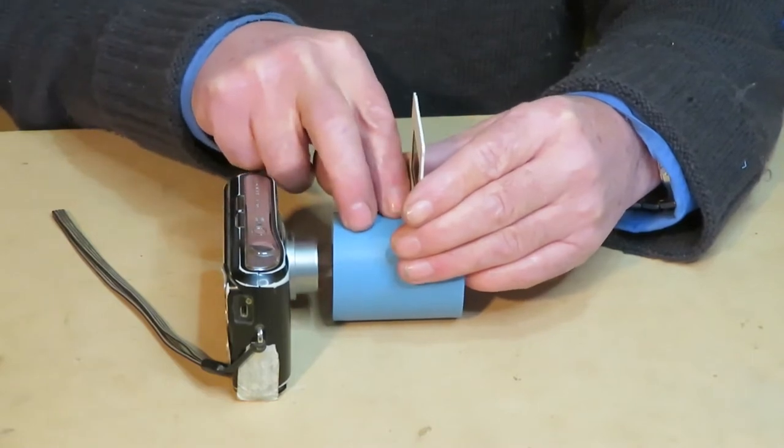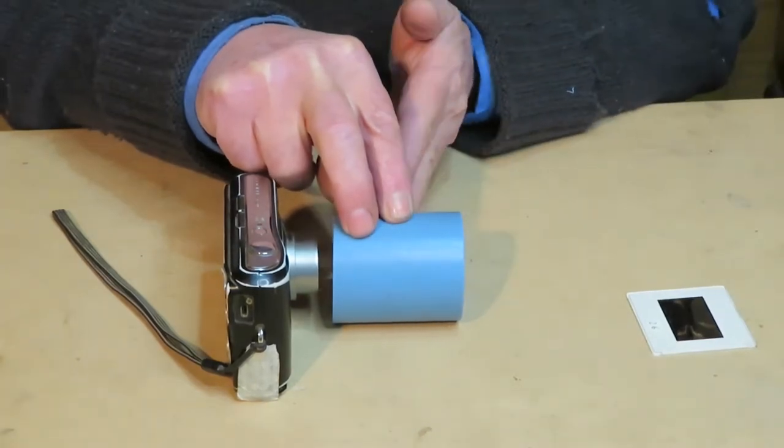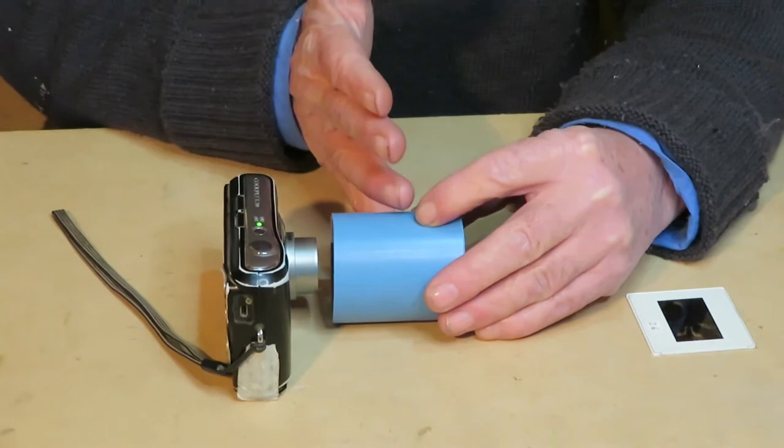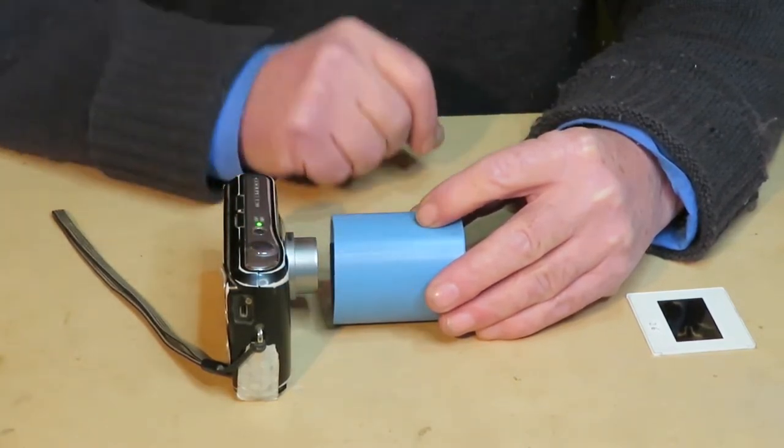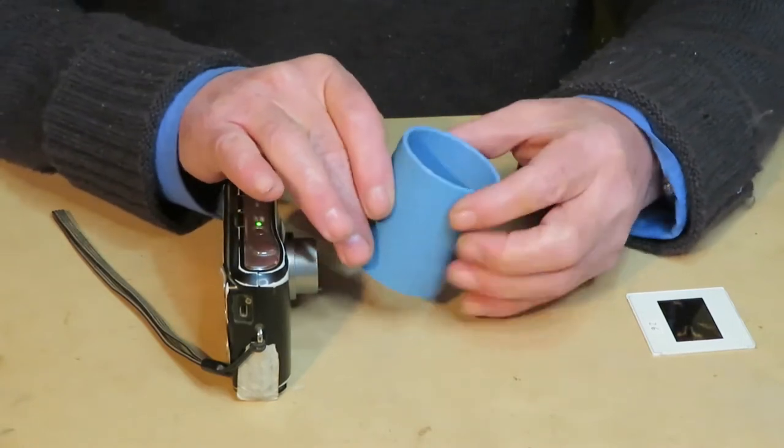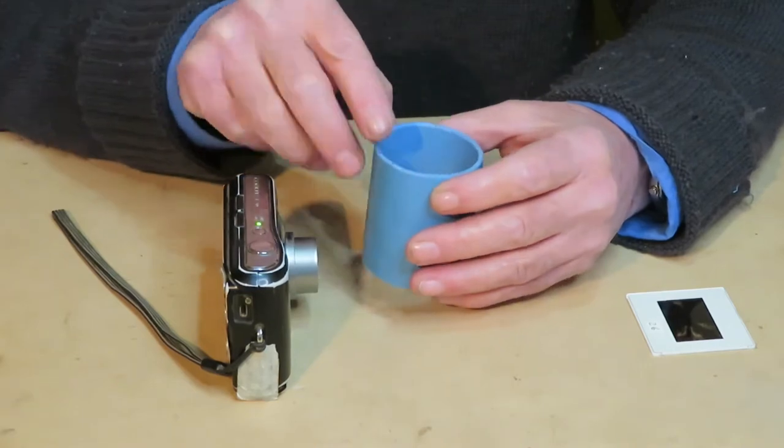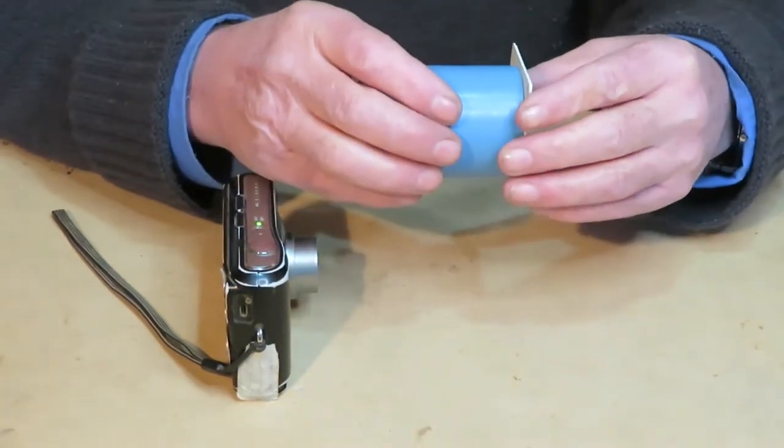So, either here we cut the tube completely or we just cut it to the sides so we can slide the slide in and out. In any case, we will have to cover this part with some material that will give us a good seal against the slide.